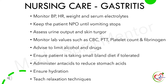Nursing care of patients with gastritis: monitor blood pressure, heart rate, weight, and serum electrolytes. Keep the patient nil per oral until vomiting stops. Assess urine output and skin turgor. Monitor lab values such as complete blood count, partial thromboplastin time, platelet count, and fibrinogen levels. Advise limiting alcohol and drugs. Ensure the patient is taking small bland diet if tolerated. Administer antacids to reduce stomach acids. Ensure hydration. And teach relaxation techniques.